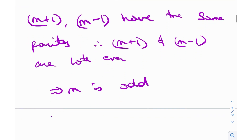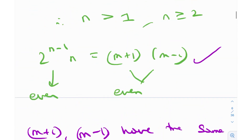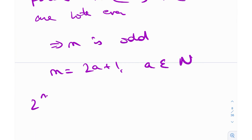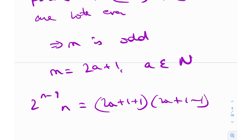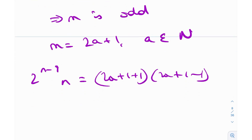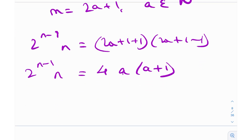Because m is odd, we can write m as 2a+1 for some natural number a. Substituting into our equation, we get 2 raised to n minus 1 times n equals (2a+2)(2a), which simplifies by taking out a factor of 4, giving us a times (a+1) equals 2 raised to the power n minus 3 times n. And again, we're going to employ parity, because parity is involved in a lot of places here.